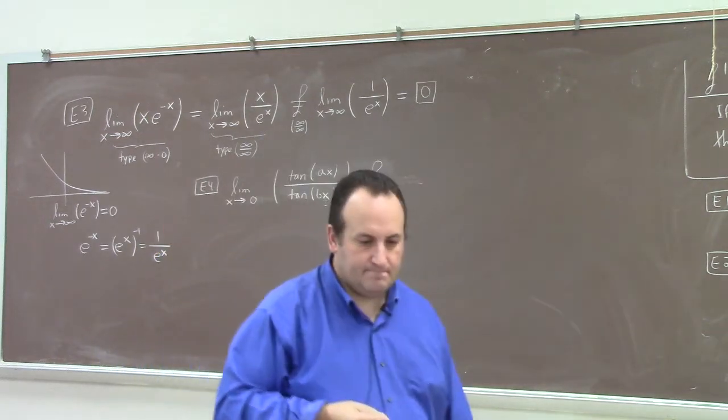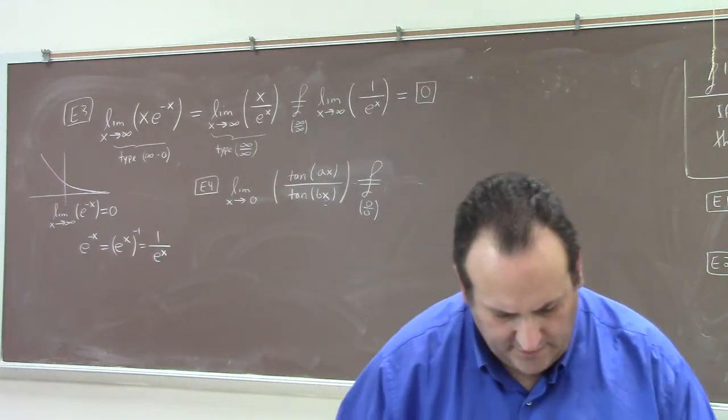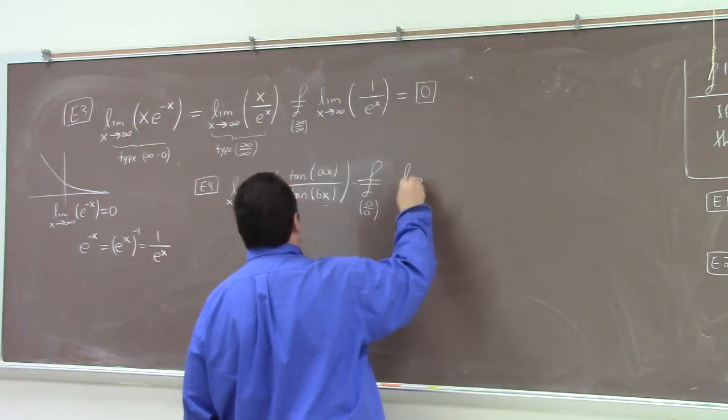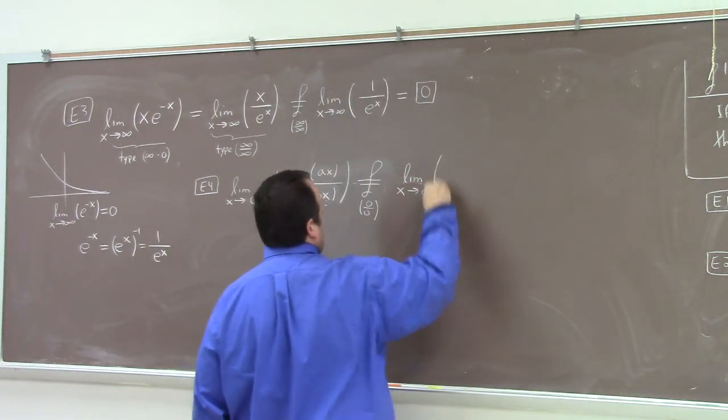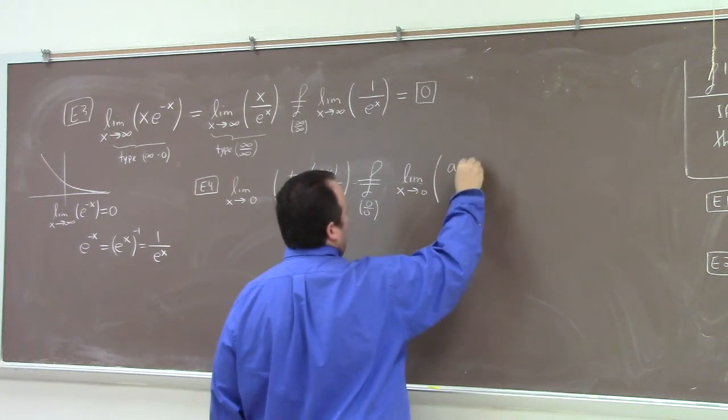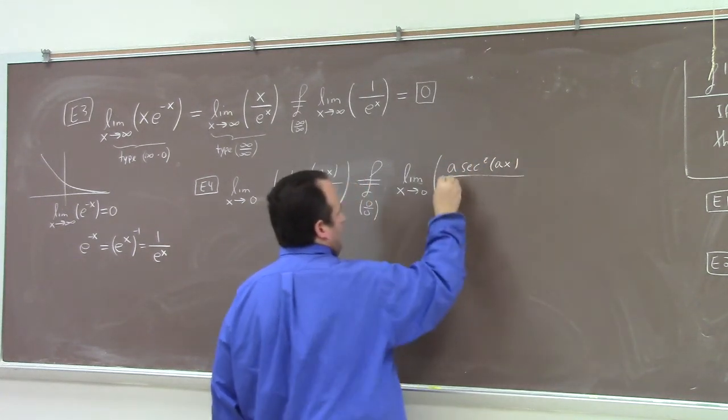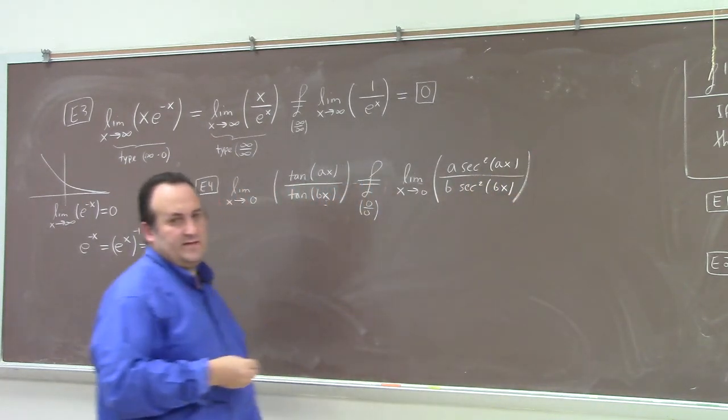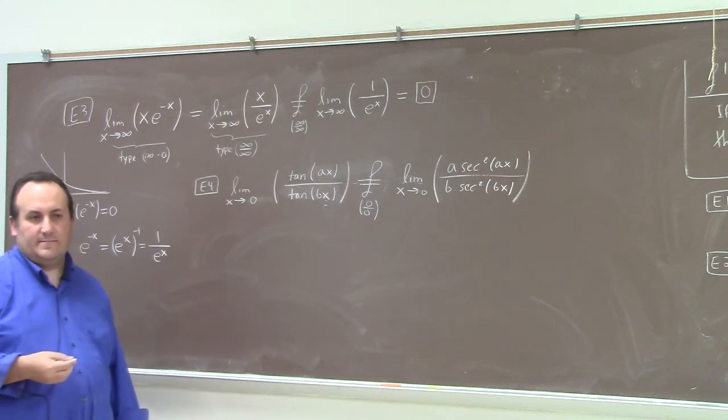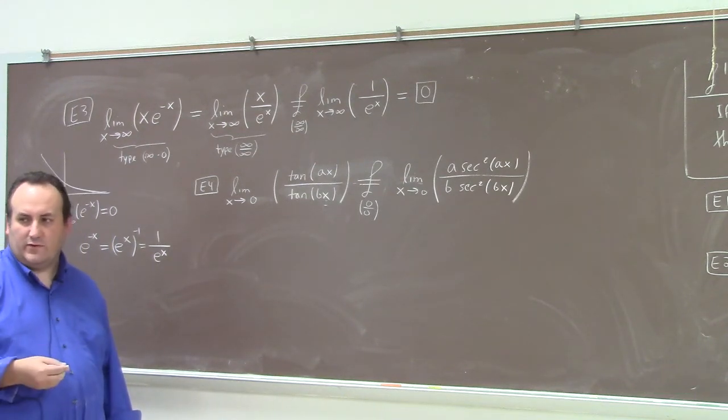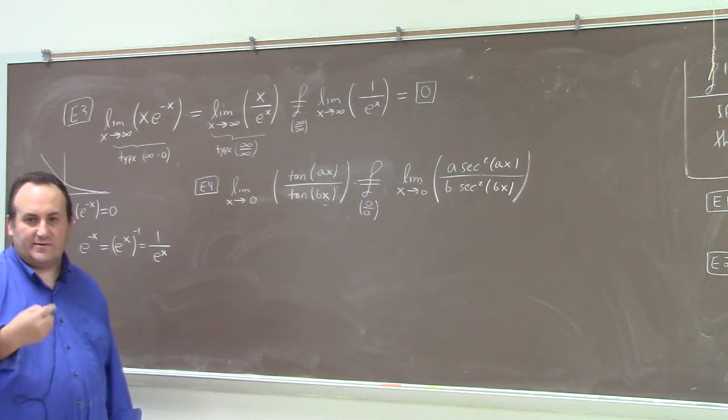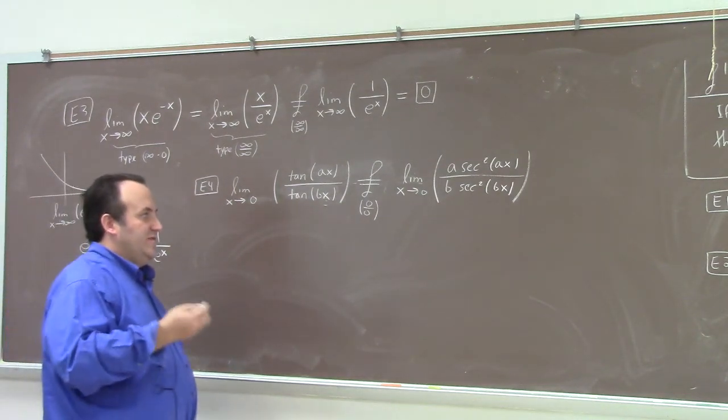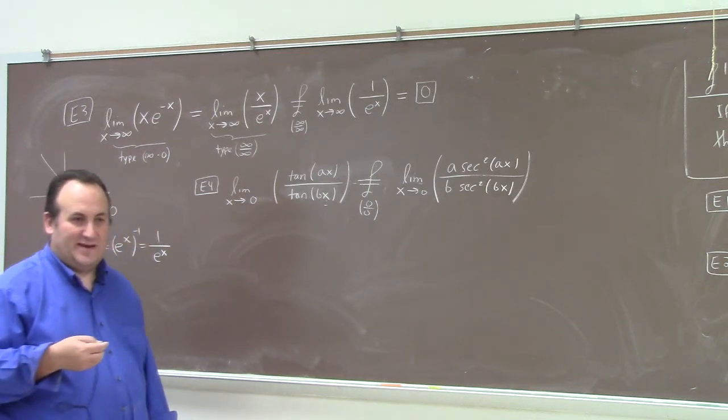What's the derivative of tangent? Oh, you guys are going to stop me. Don't let me go over. Sorry, I just lost track of time in the last one. I'll finish this one. So we got a secant squared ax divided by b secant squared bx. Differentiating the top, differentiating the bottom. Isn't it beautiful we don't have to do the quotient rule? We separately differentiate the numerator and the denominator.